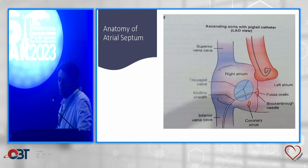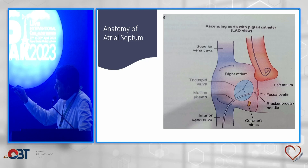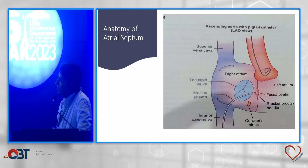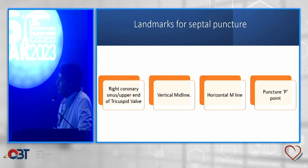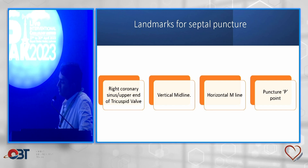A brief description of the anatomy of the atrial septum: identify the aorta, which is the upper border, then the fossa ovalis, and then the tricuspid valve. This is the anatomy of the interatrial septum that we are working on and must keep in mind. There are four important landmarks: first is the right coronary sinus, which is basically the upper end of the tricuspid valve; then the vertical midline, horizontal M line, and puncture P point. These last three are imaginary lines.